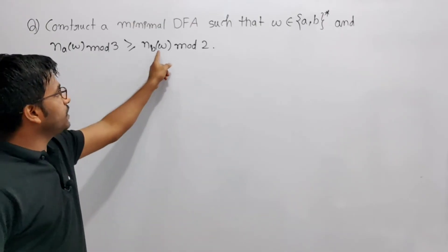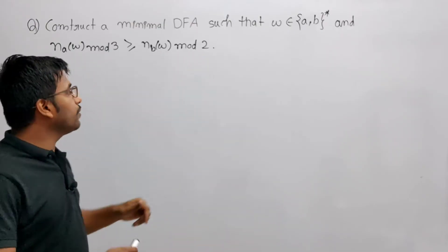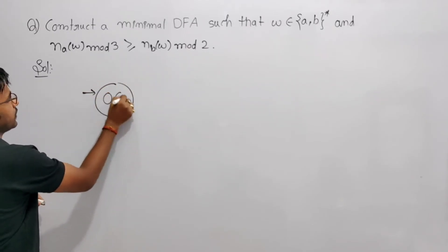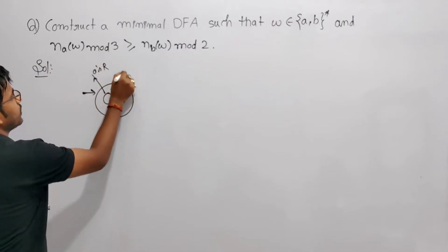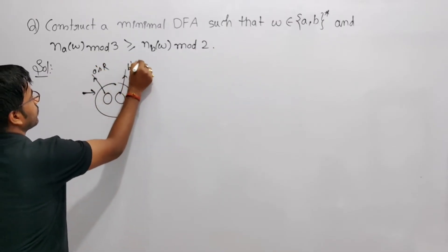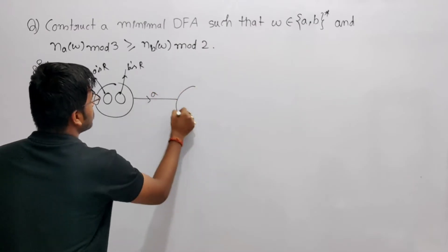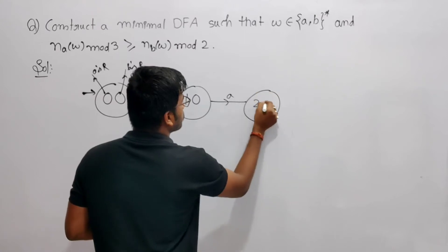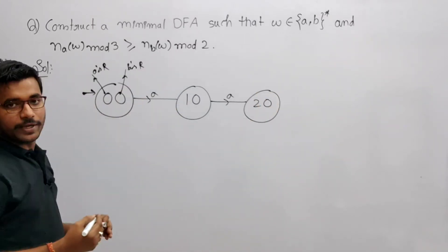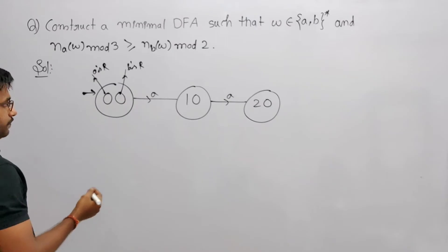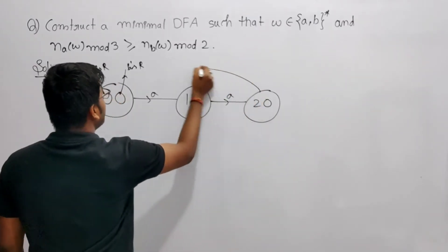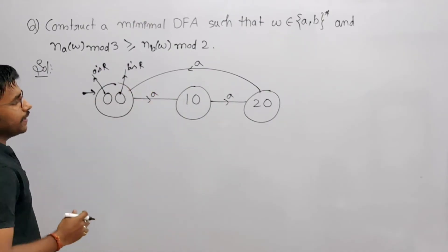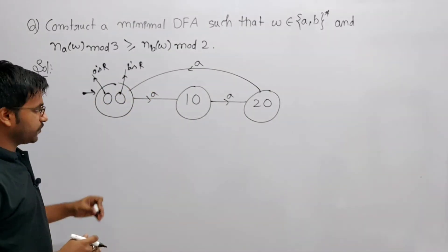So first we will construct a minimal DFA. State (0,0) — this is for a's remainder and this is for b's remainder. By getting 'a' it will go to (1,0), then again by getting 'a' it will be (2,0), because I am just increasing a's remainder. Then by getting another 'a' we get back to (0,0). I counted a's transitions vertically.